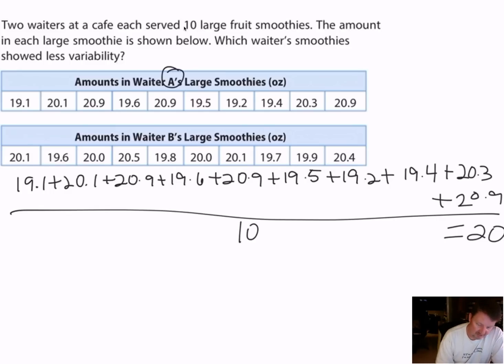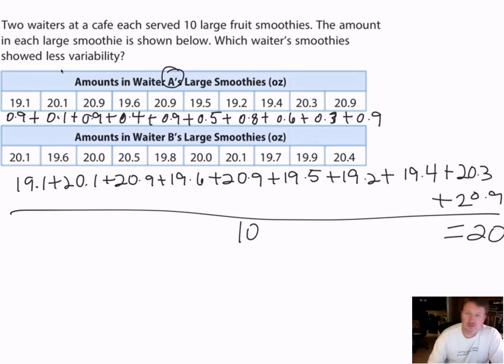So I'm going to take my value of 20 right here and I'm going to find out how far away each one of these servings is from 20. So 19.1 is 0.9 away from 20. 20.1 is 0.1. I'm going to add these as I go. 20.9 is 0.9 away. 19.6 is 0.4 away. 20.9 is 0.9. 19.5 is 0.5. 19.2 is 0.8. 19.4 is 0.6, 20.3 is 0.3, and 20.9 is 0.9.